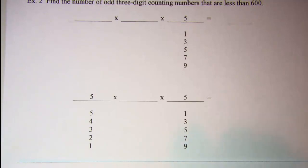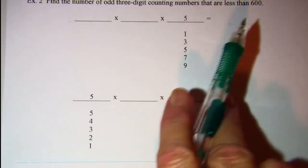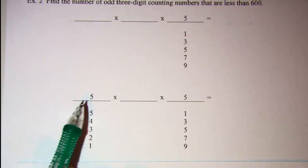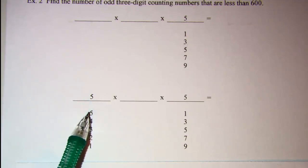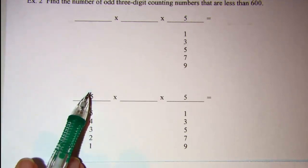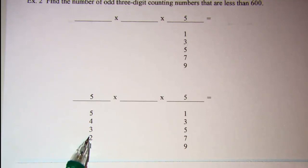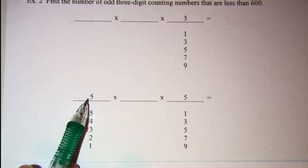Then in order for it to be less than 600, I have to fill in this front space next. In order for it to be less than 600, I have to have a digit that's below 6. If I put a 6 in here, it'll be more than 600. So I can choose from the digits 5, 4, 3, 2, or 1. So I have five ways that I can fill in this number.